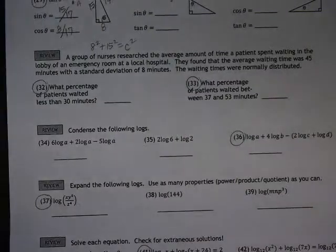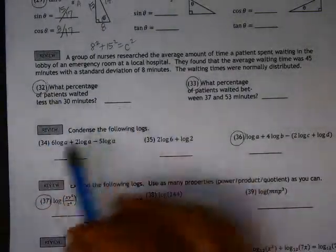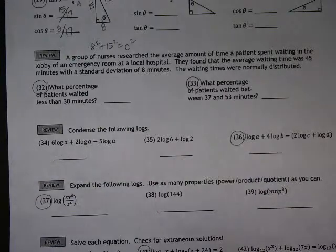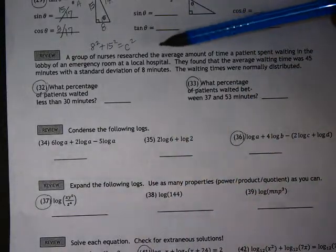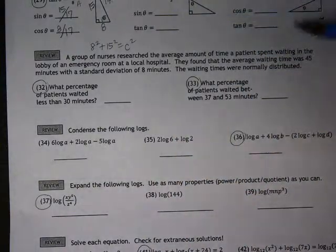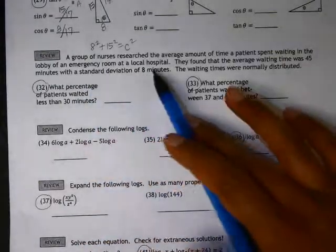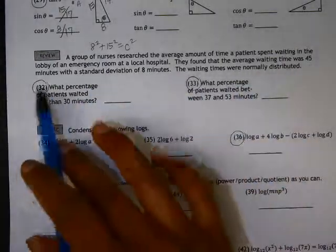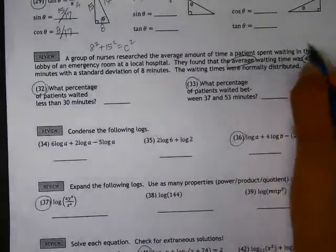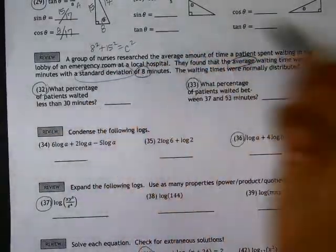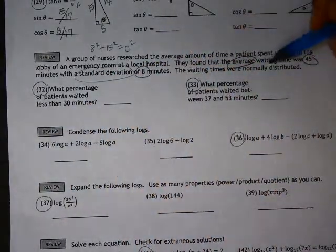This is worksheet 30.4 review, numbers 32 and 33. In this problem, we have a group of nurses researching the average amount of time a patient spent waiting in the lobby of an emergency room at a local hospital. They found that the average waiting time was 45 minutes and the standard deviation was 8 minutes. The waiting times were normally distributed.